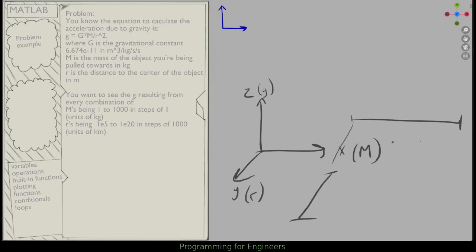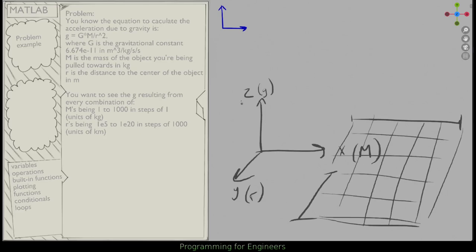And so we know this is where I want to apply mesh grid, because I want to construct a big mesh here that then has the z, the g calculated at each of these combinations of m's and r's, right? Because I want to see the g resulting from every combination of m's and r's.